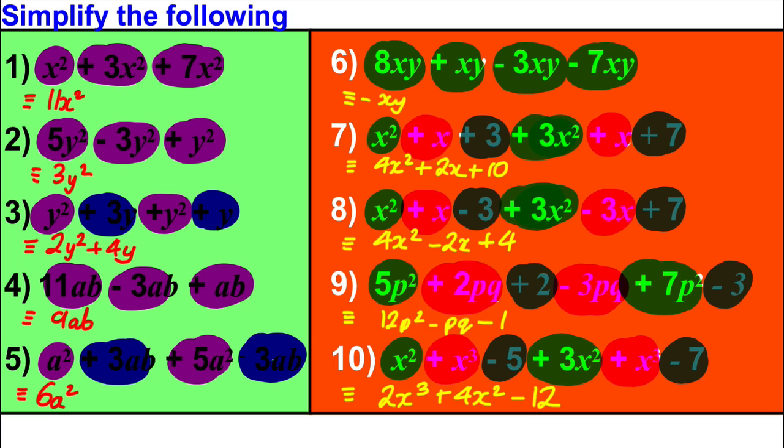9ab, 6a squared, because you'll notice here the 3ab subtract 3ab gives you nothing, and then up here we had negative xy.